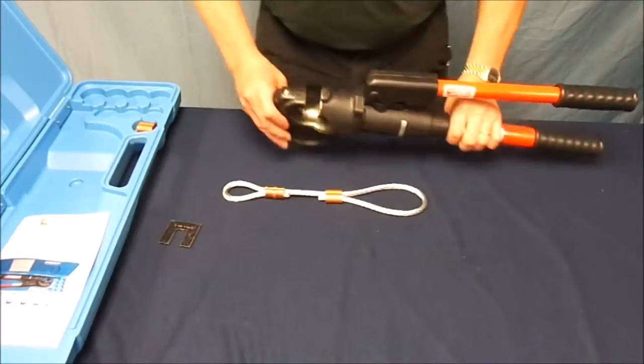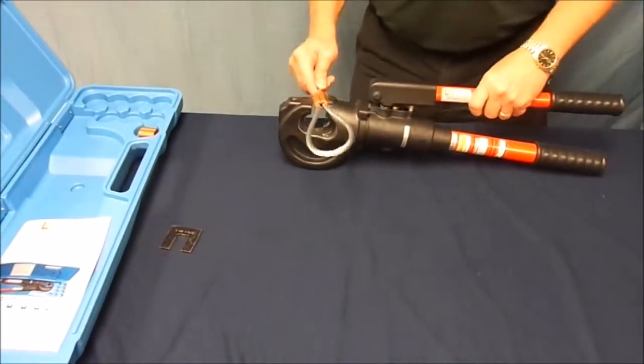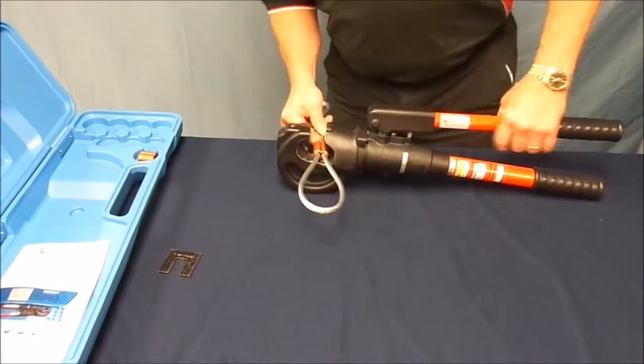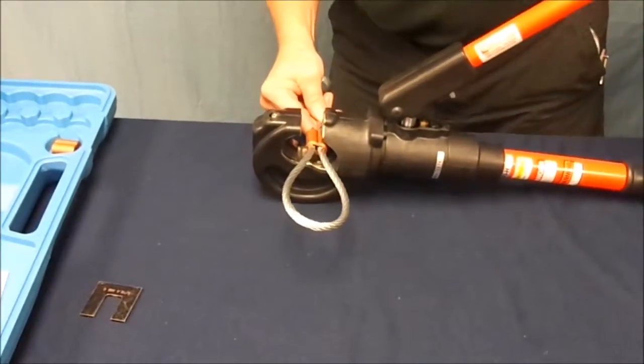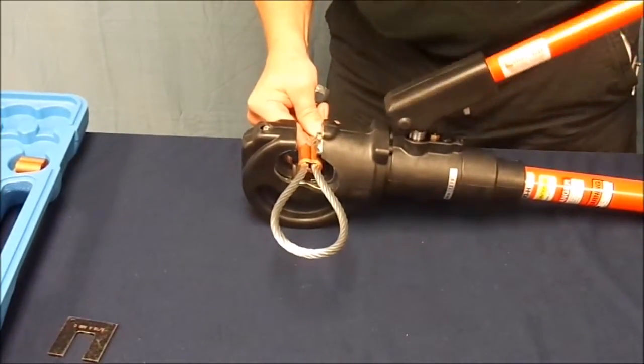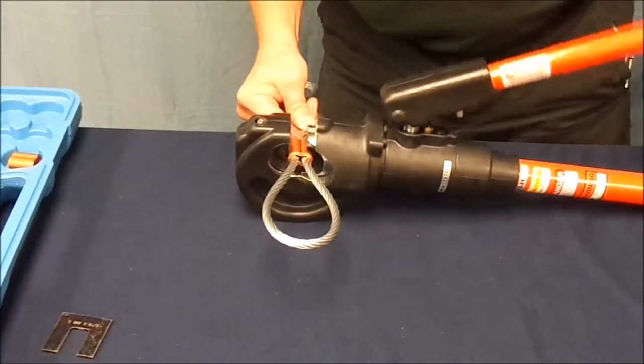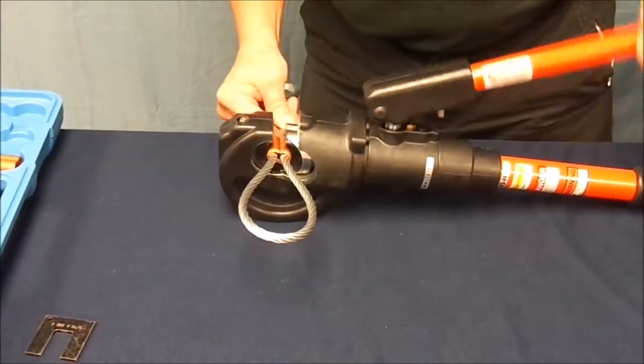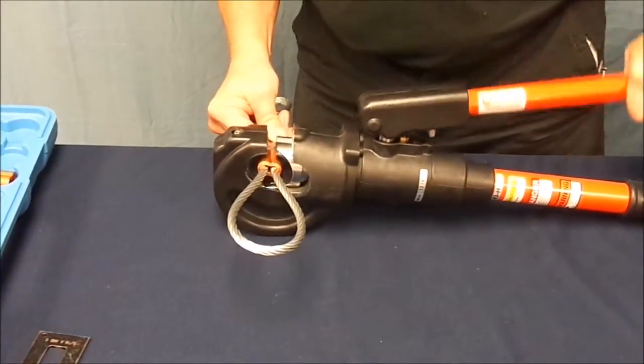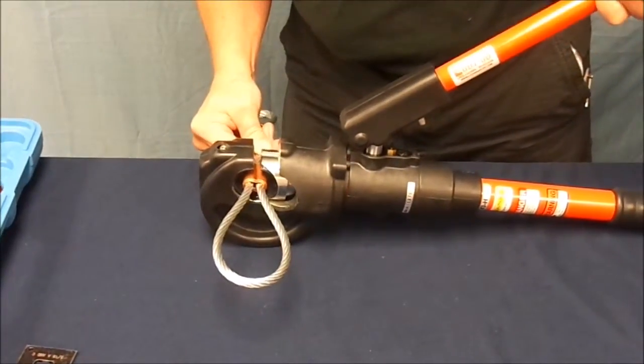In this demonstration, we will be compressing a 5-16th copper oval sleeve. Starting at the end of the fitting, furthest from the loop, begin to make your first compression. Pumping the handle approximately 25 to 30 times until a clicking sound is heard.